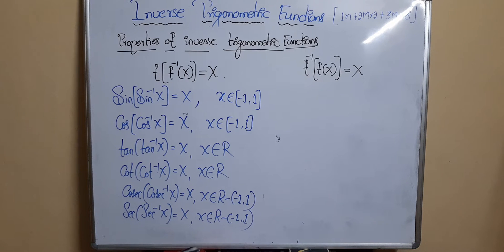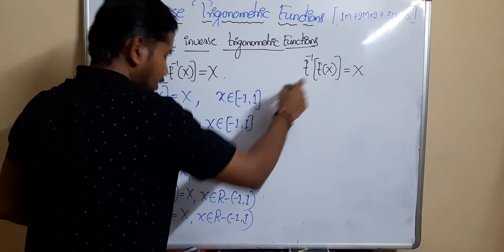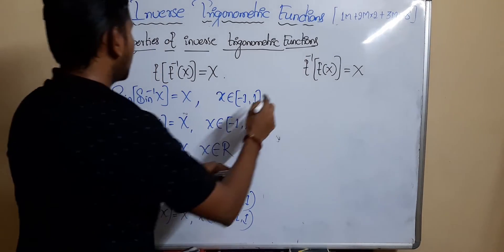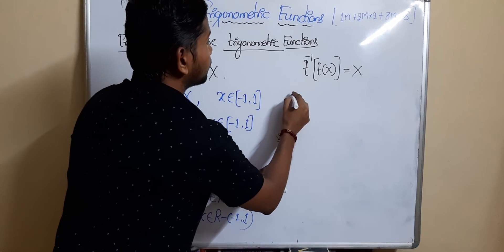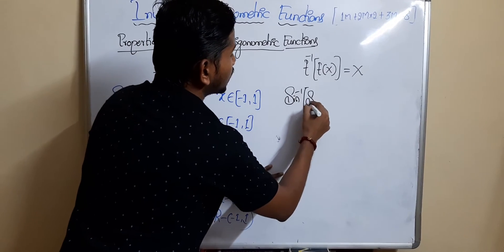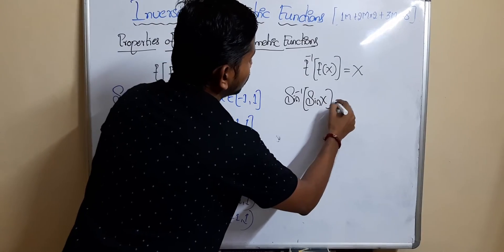Now the next part: f⁻¹(f(x)) = x — here the inverse is on the outside and the regular function is inside. Similarly, sin⁻¹(sin(x)) = x.